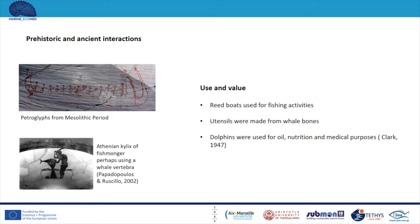Our main sources for prehistoric and ancient interactions are myths, ancient art, iconographic representations, and classical literature. There is a petroglyph depicting a reed boat used for fishing activities, indicating that people used boats made from locally available materials. In another picture, you can see a fishmonger whose knife or table were possibly made from whale bones — it is known that whale bones were used to make tools or furniture. As for dolphins, apart from people eating them, they were also used to produce oil or drugs.